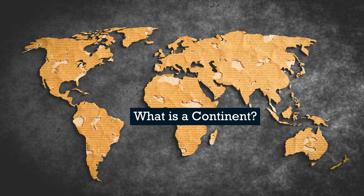2. Distinct Boundaries: Continents are typically separated from each other by oceans and seas, such as the Atlantic Ocean, which divides North America from Europe and Africa. Some boundaries are defined by significant geographical features like mountain ranges or rivers. For example, the Ural Mountains form the boundary between Europe and Asia.